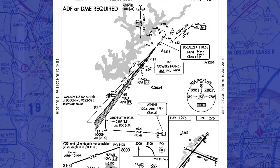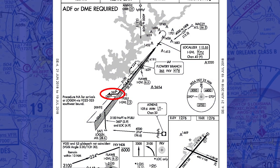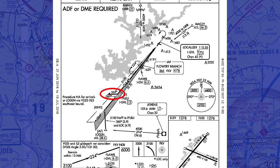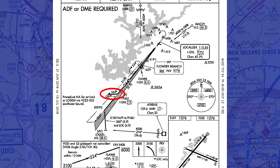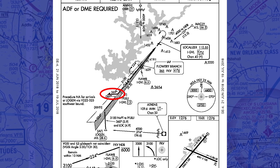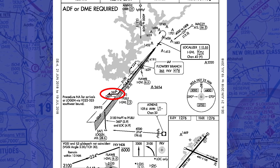If we look at an approach chart like this one, we can look at the final approach course and see this barb sticking out. This signifies that a procedure turn is needed to reverse course.